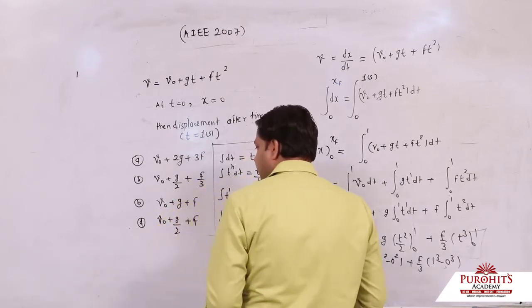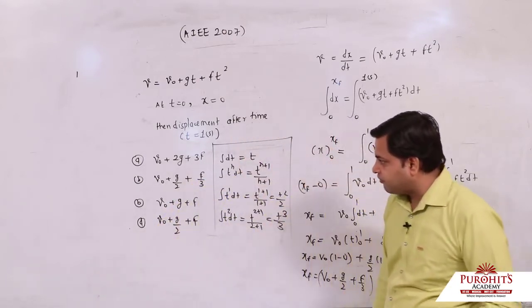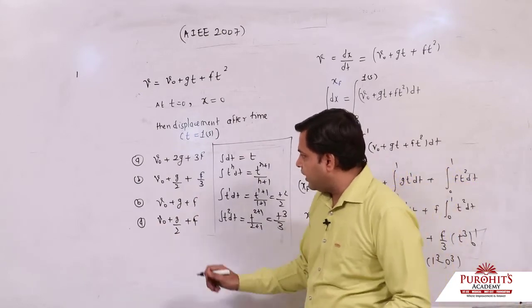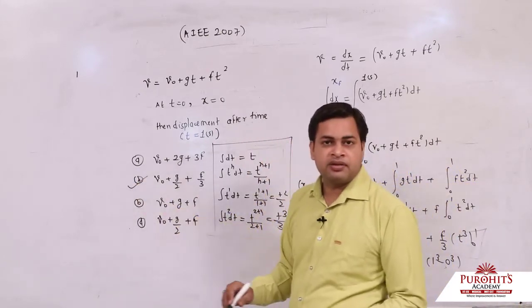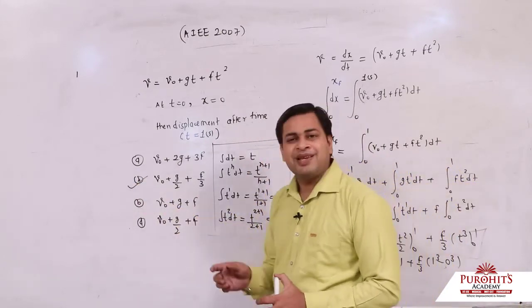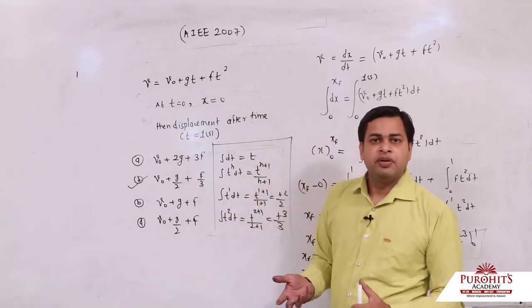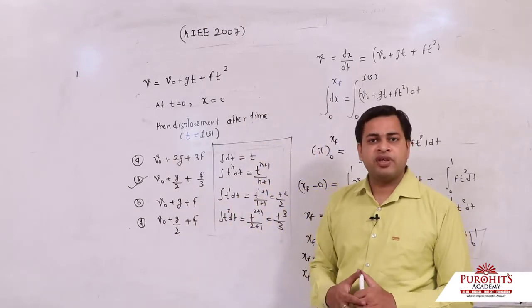Look here, you have v0 plus g by 2 plus f by 3. So this option appears correct to you. So again, a very simple problem in which integration concept was used.